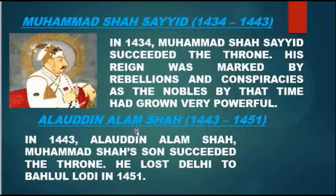Alauddin Alam Shah ruled from 1443 to 1451. In 1443, Alauddin Alam Shah, Muhammad Shah's son, succeeded the throne. He lost Delhi to Behlul Lodhi in 1451.